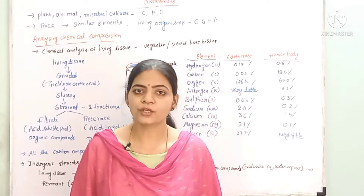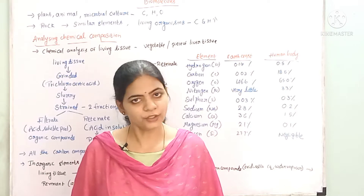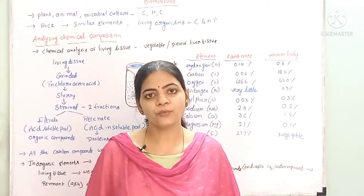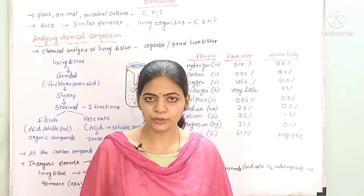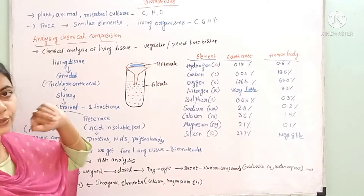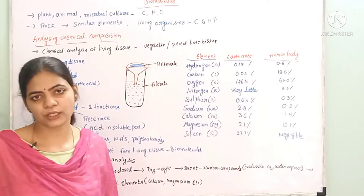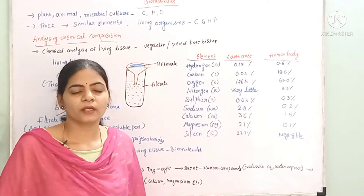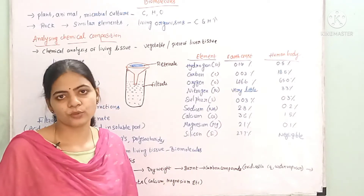Living organisms have the same type of chemical composition. Almost any living organism exists as chemical compounds. For example, plant tissue, animal tissue, microbial culture. In the laboratory, micro-organisms grow.